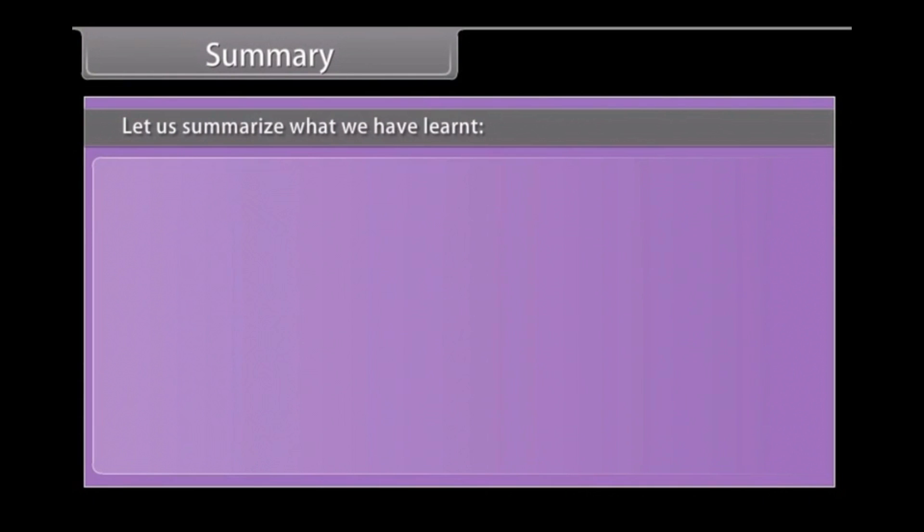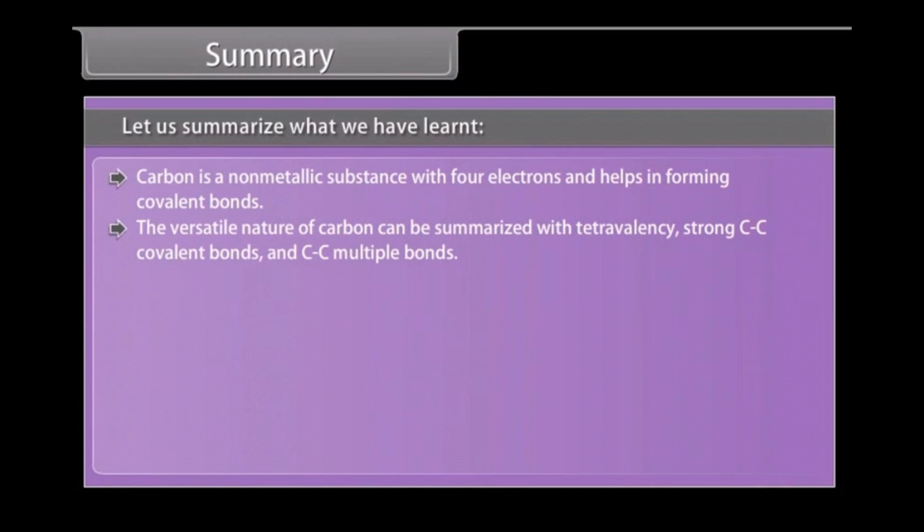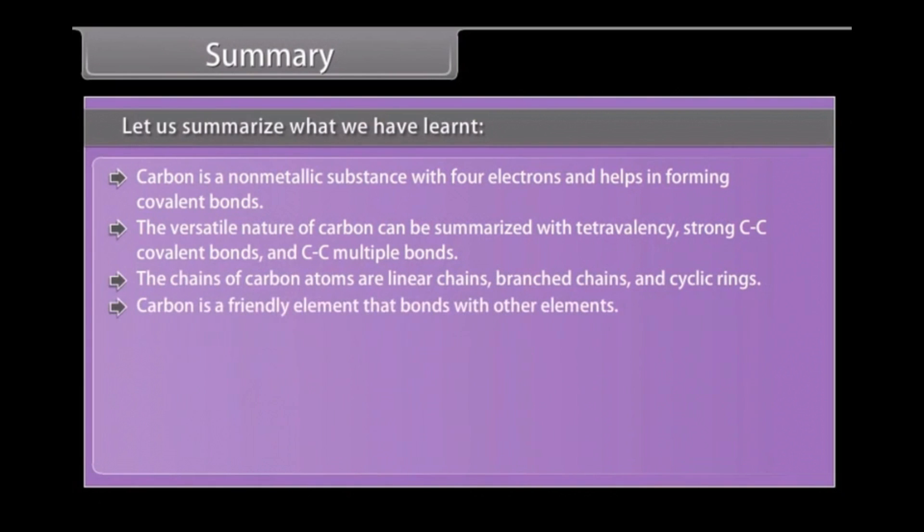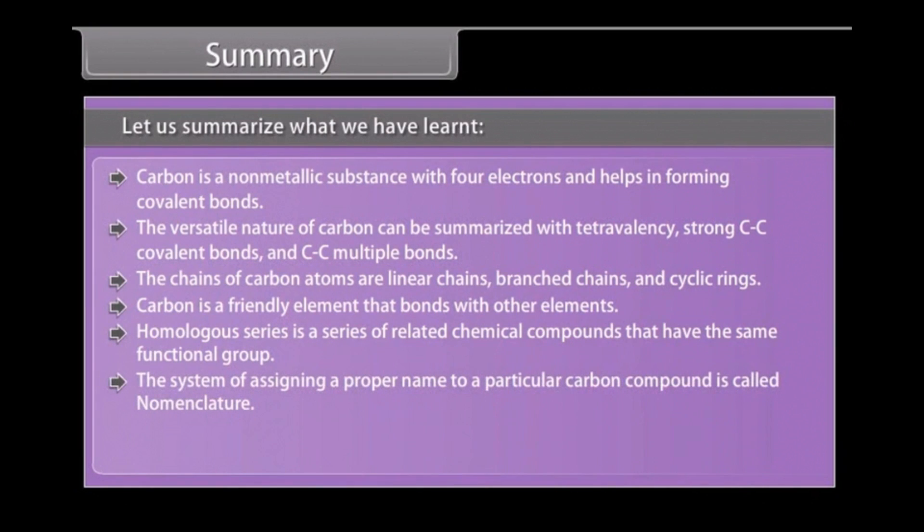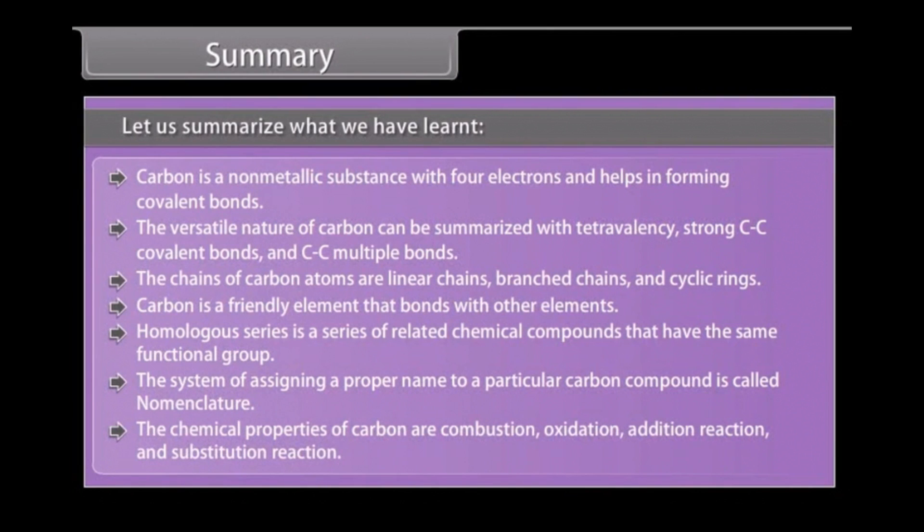Summary. Let us summarize what we have learned. Carbon is a non-metallic substance with four electrons and helps in forming covalent bonds. The versatile nature of carbon can be summarized with tetravalency, strong carbon-carbon covalent bonds, and carbon-carbon multiple bonds. The chains of carbon atoms are linear chains, branched chains, and cyclic rings. Carbon is a friendly element that bonds with other elements. Homologous series is a series of related chemical compounds that have the same functional group. The system of assigning a proper name to a particular carbon compound is called nomenclature. The chemical properties of carbon are combustion, oxidation, addition reaction, and substitution reaction.